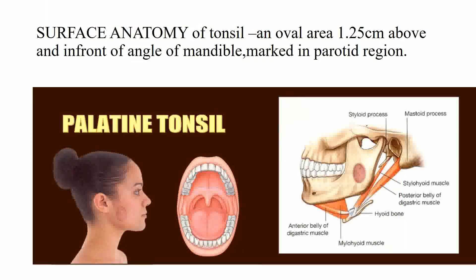Next is the surface anatomy of the tonsil, which is very important clinically, because you should know where exactly the tonsil is present. It is located in an oval area 1.25 cm above and in front of the angle of the mandible, marked in the parotid region. There is a picture showing where exactly the tonsil is present.